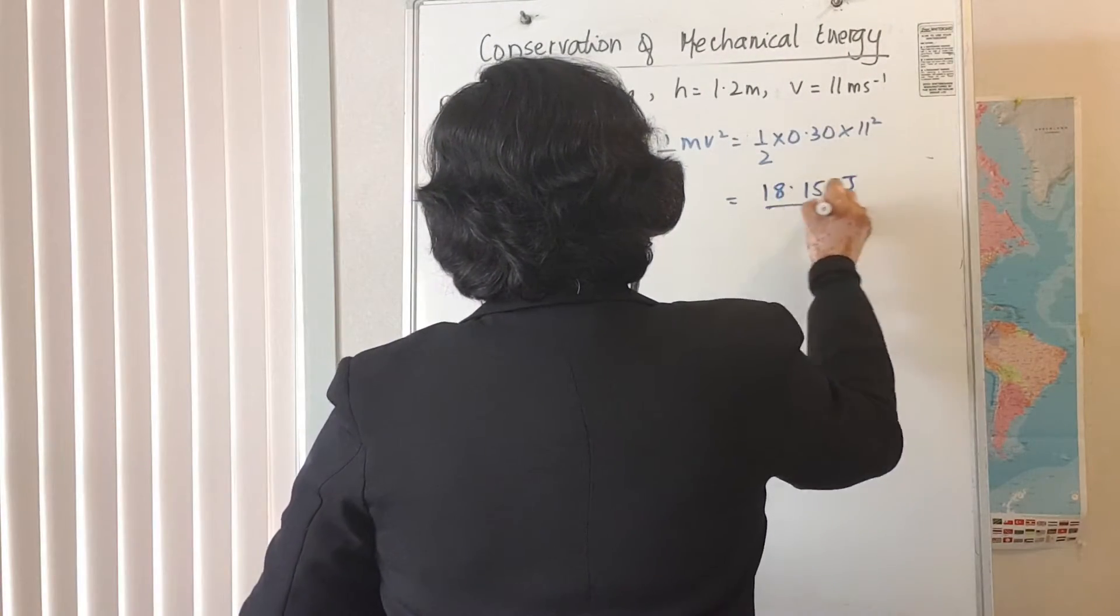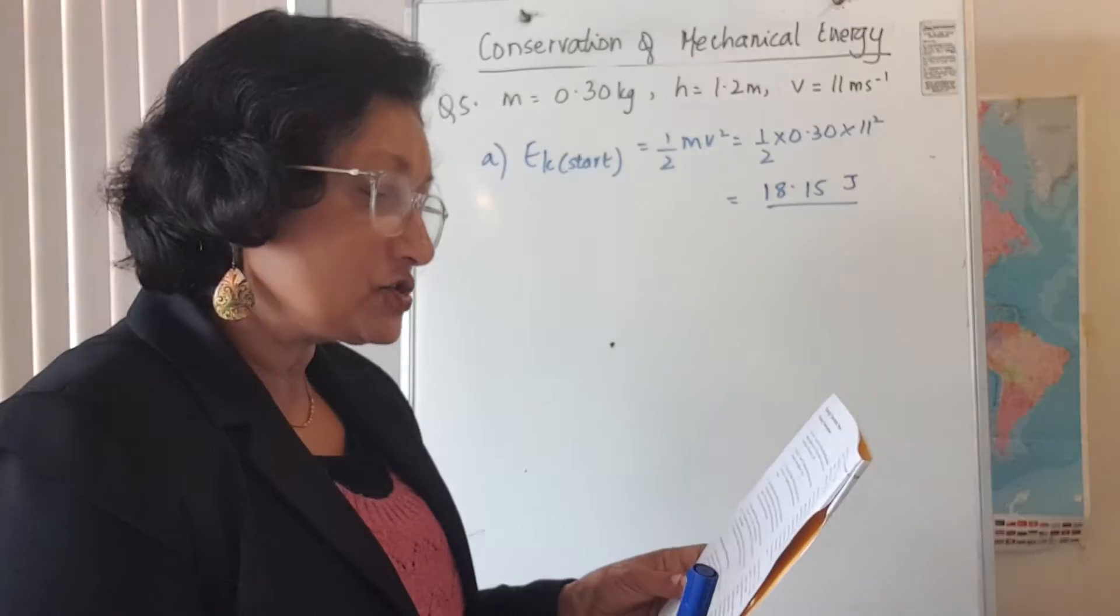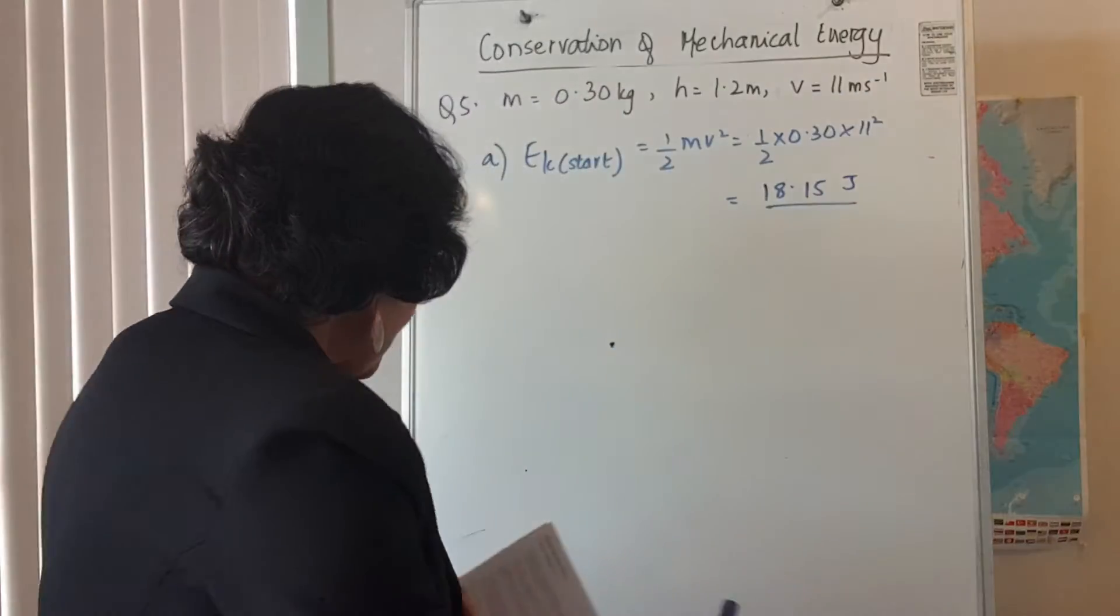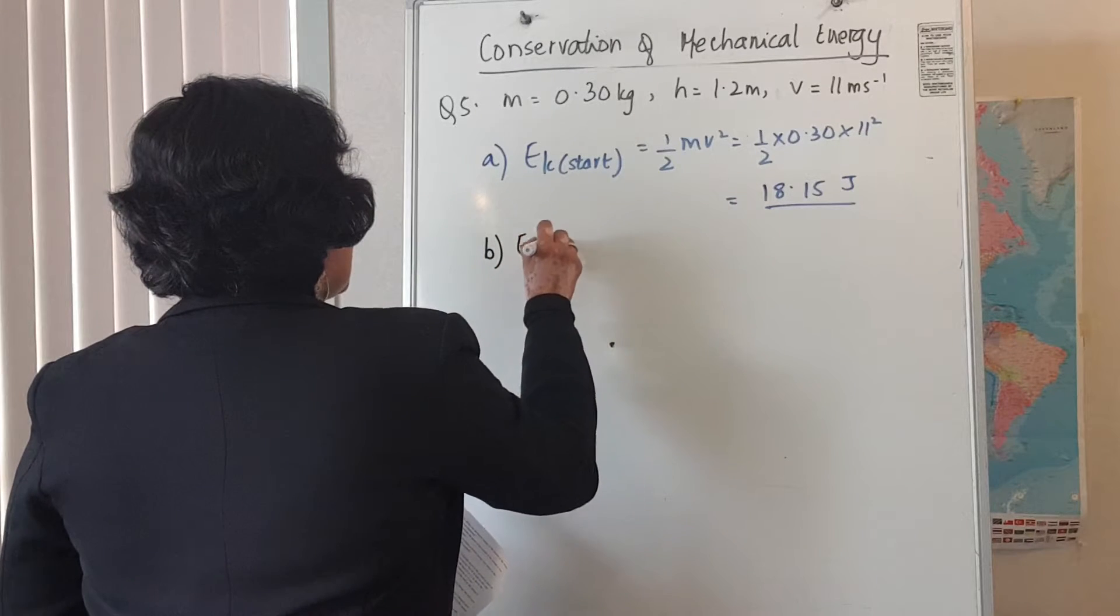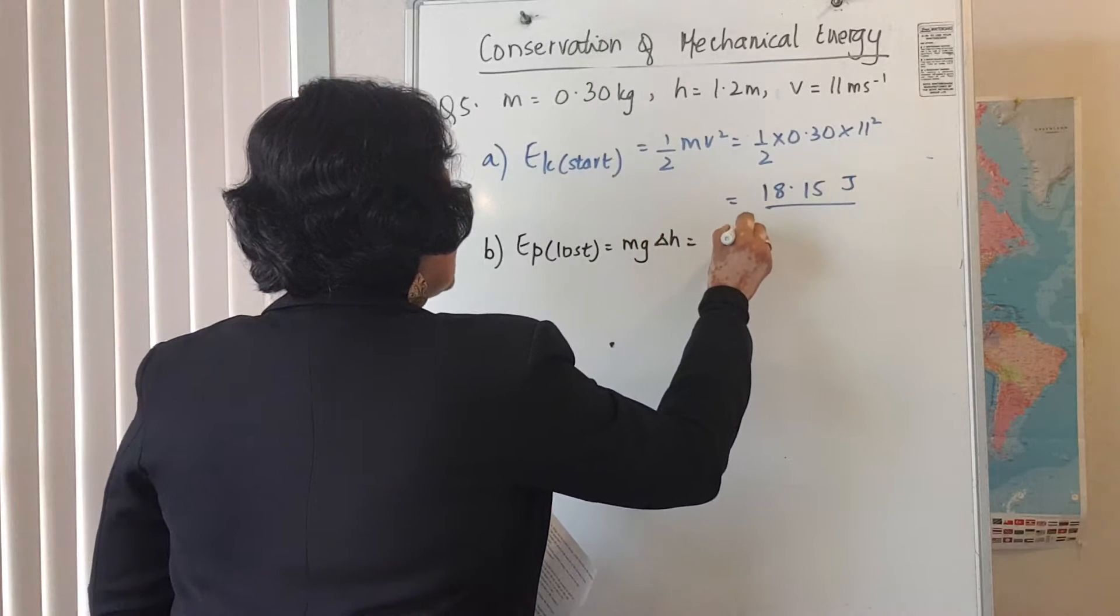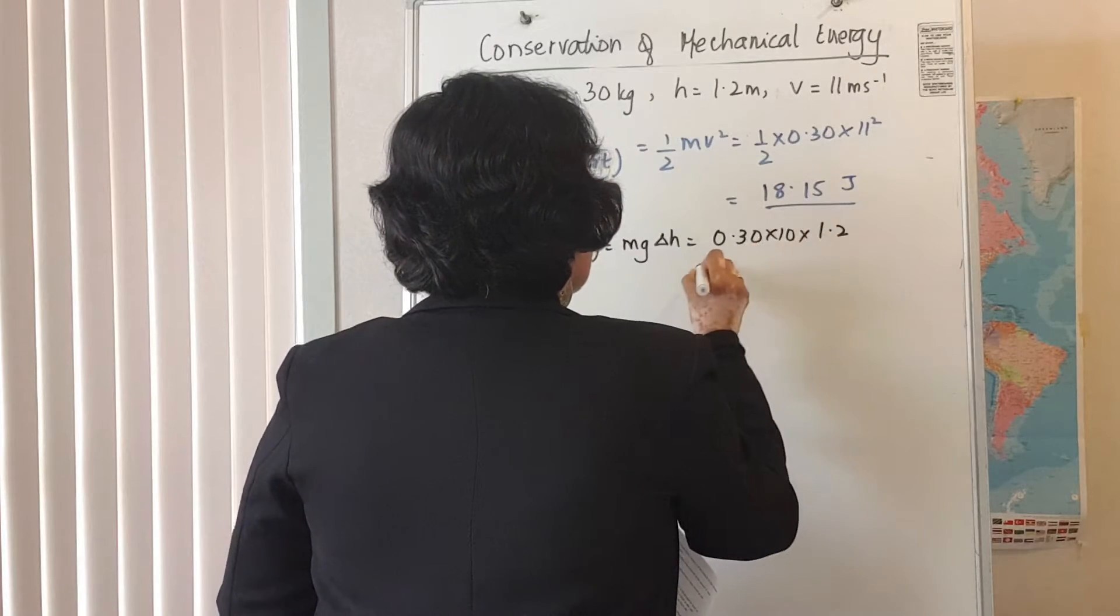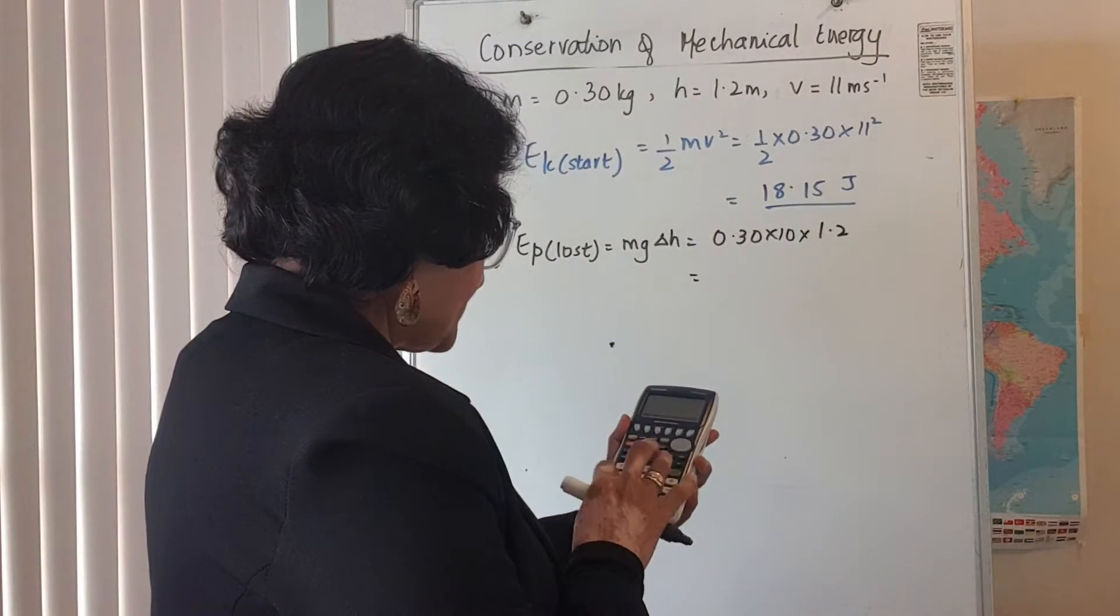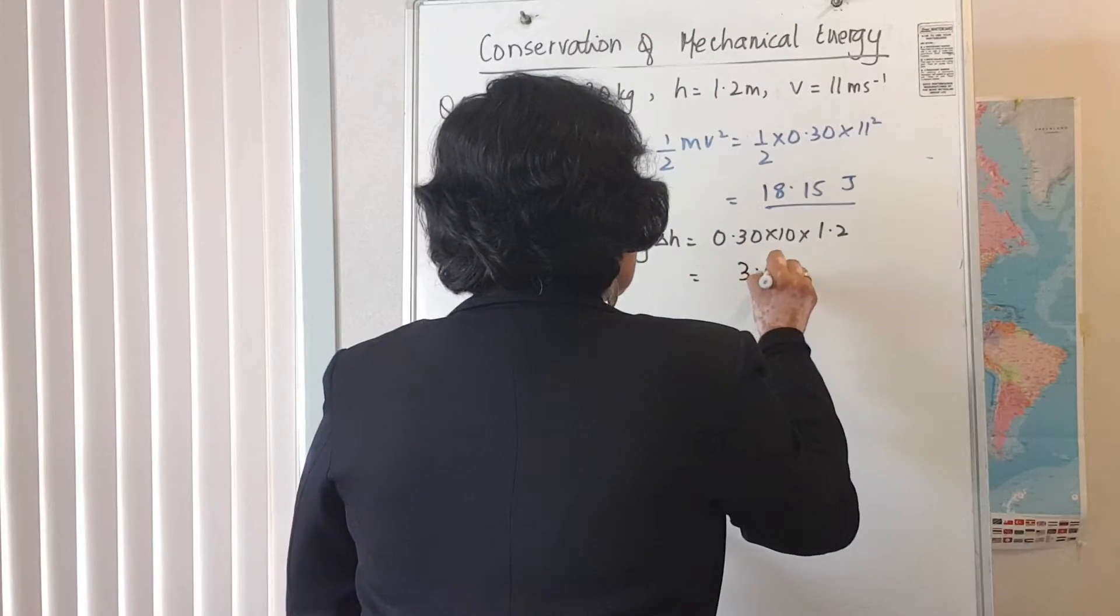Then the next thing we have to do is calculate the gravitational potential energy the ball loses as it travels down to the ground. For gravitational potential energy we need mgh, so Ep lost is mg delta h. Your mass is 0.30, g is 10, and the height is 1.2 meters, so that's 3.6. So you go 0.30 times 10 times 1.2, you get 3.6 joules.